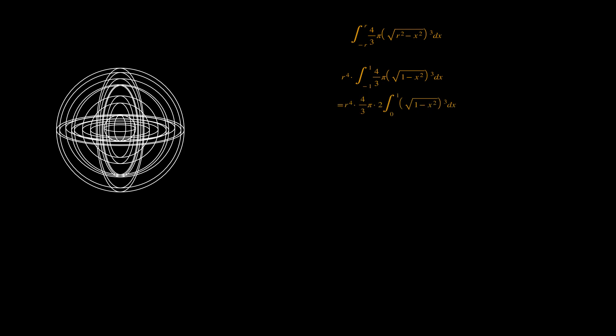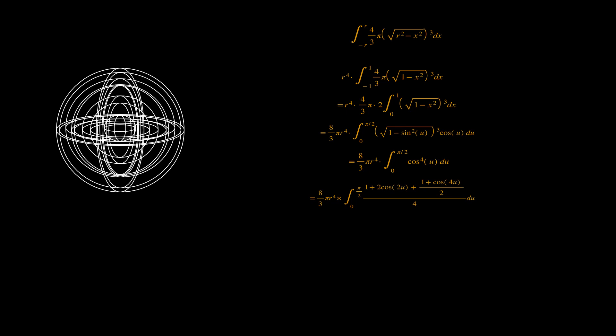To solve the integral, we take out the four-thirds pi from the integral. Since our function is even, we replace the integral from negative one to one with two times the integral from zero to one. We substitute x equals sine of u, so dx equals cosine of u du. That gives us eight-thirds pi r to the fourth times the integral from zero to pi over two of cosine to the fourth of u du. Using the trigonometric identity that cosine squared u equals (1 plus cosine 2u) over 2, applied twice, this equals eight-thirds pi r to the fourth times three over sixteen pi — giving us the formula: pi squared over 2 times r to the fourth.